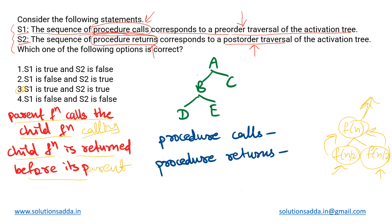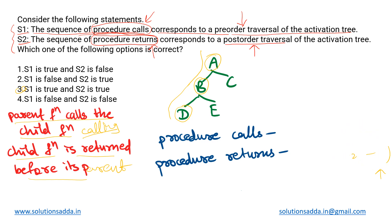Now if we have this particular tree, A is the parent, so we proceed like this: A will call its first child, B. Now B becomes the parent — it has two children — so it will call its first child, D. Let us also note down what the calling order is that we are getting.